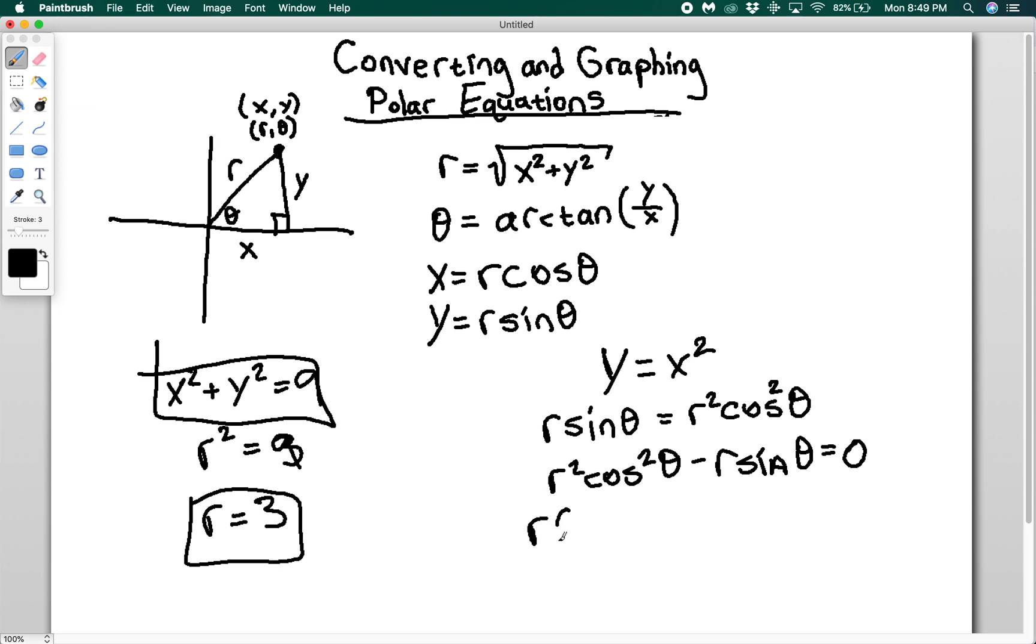We can pull out an r I guess, so you have r times cos squared theta minus sine theta equals zero. This is pretty gross. We can keep going with this, but a parabola is really best represented in Cartesian, at least a parabola centered with the vertex at the origin. If we add things in, if I say plus, you know, this is ax squared plus bx plus c, this just gets a lot worse as we transform it over.